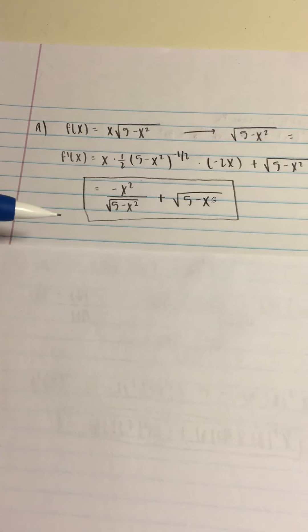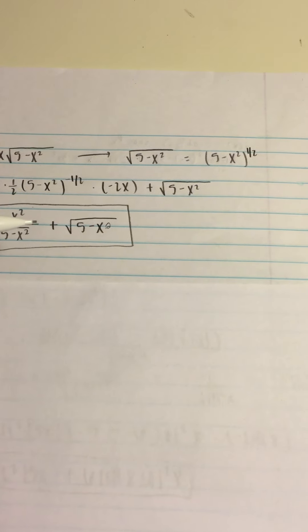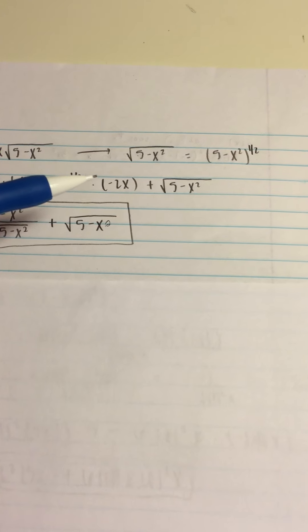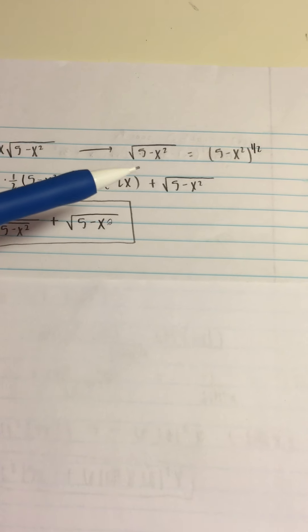This is CPM chapter 5, problem 122. We are asked to find the derivative of each function. So with A, we are given f of x equals x times root 5 minus x squared. The first thing I did was rewrite root 5 minus x squared as 5 minus x squared to the 1 half power.